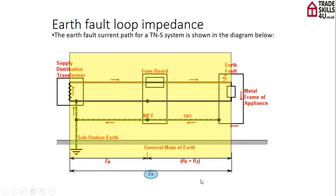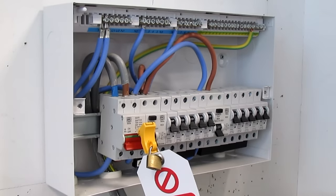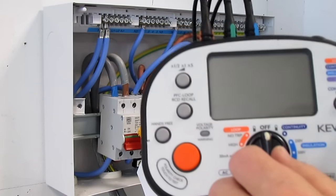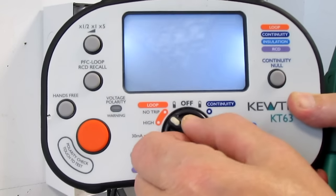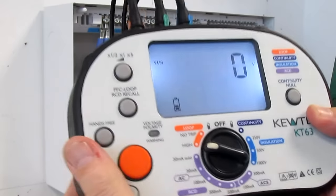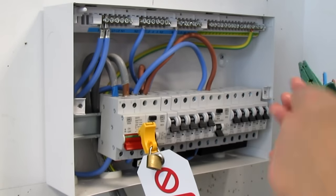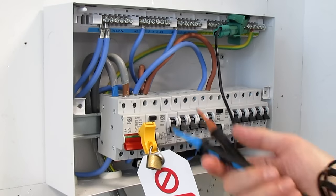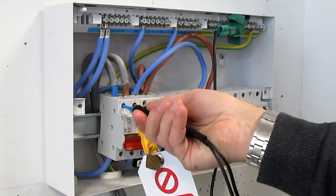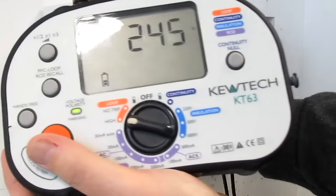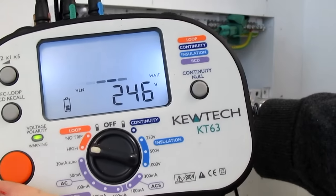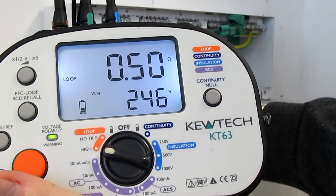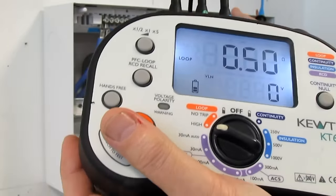On our schedule of test results in the top left-hand corner, you will see ZS at dB. I have to do a ZS at dB at the installation origin as well. So set my meter to high — this time the earthing conductor stays connected. Because there are no parallel paths here, I'm expecting to get the same reading, and in a domestic situation it would probably be the same. And there we go — 0.50 ohms. ZS at dB.